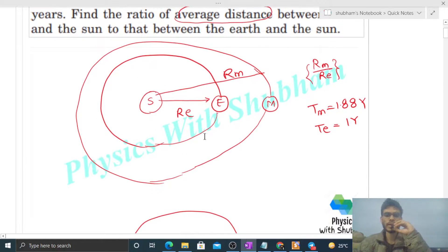So you can use this result that time period square will be directly proportional to radius cube. It means time period of Mars divided by time period of Earth, its square, will be equal to radius of Mars divided by radius of Earth cube.